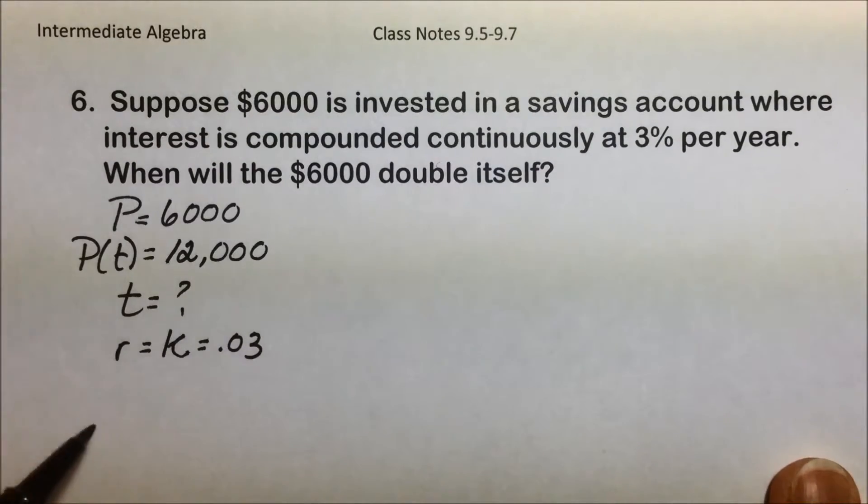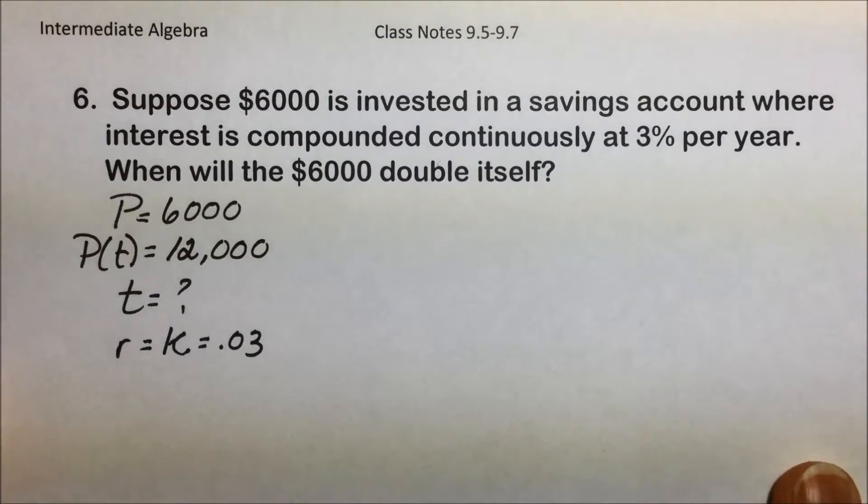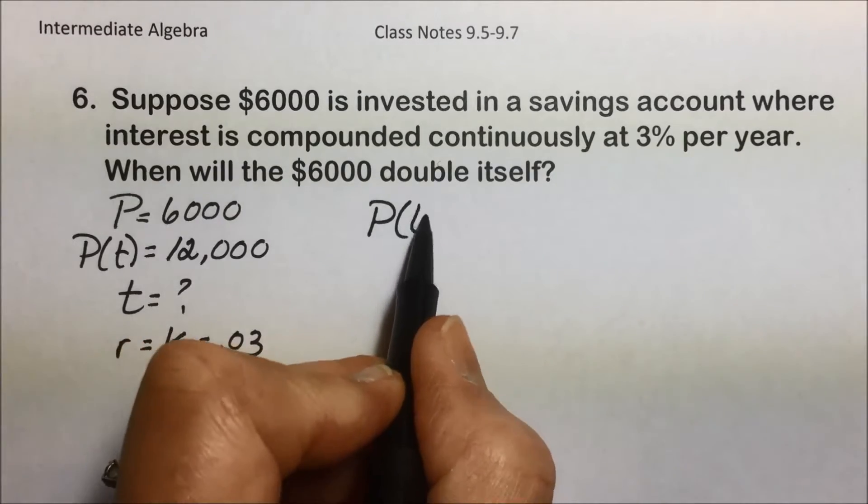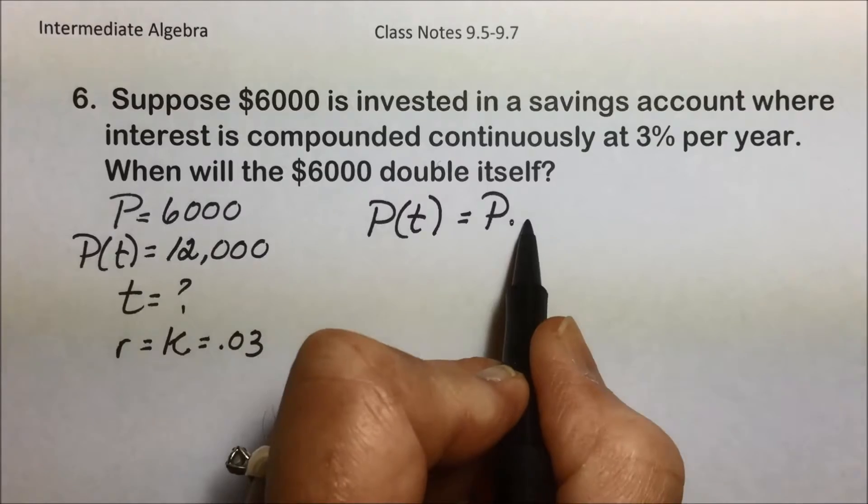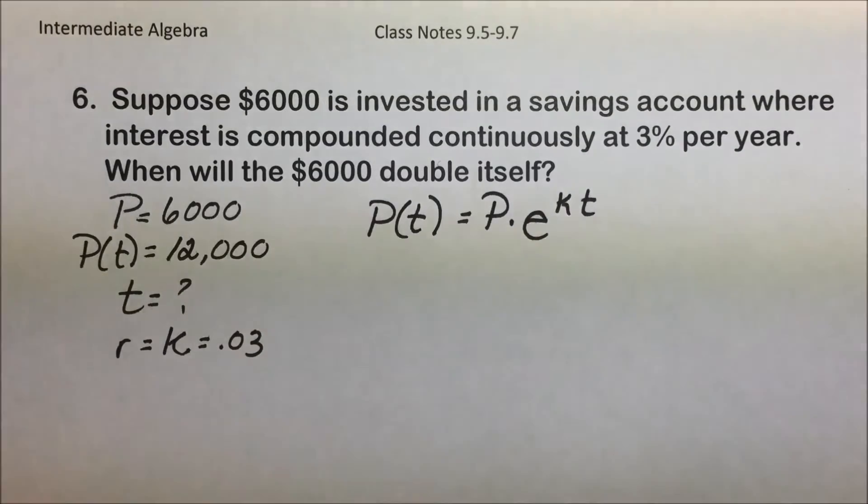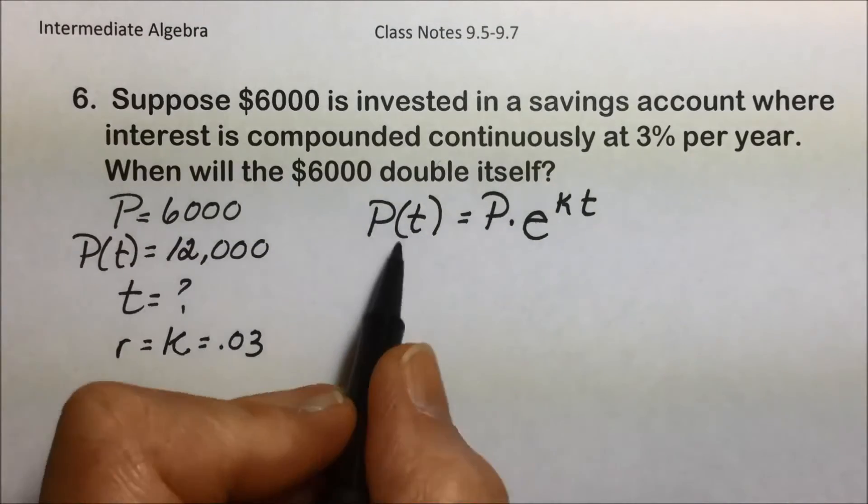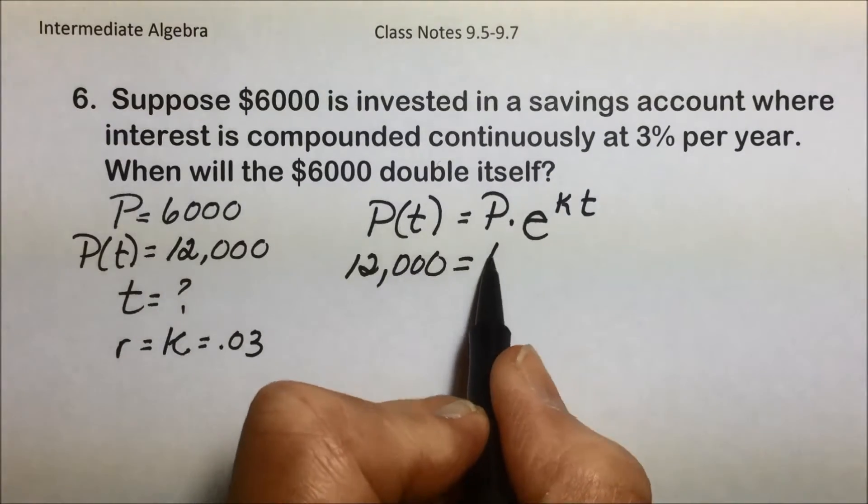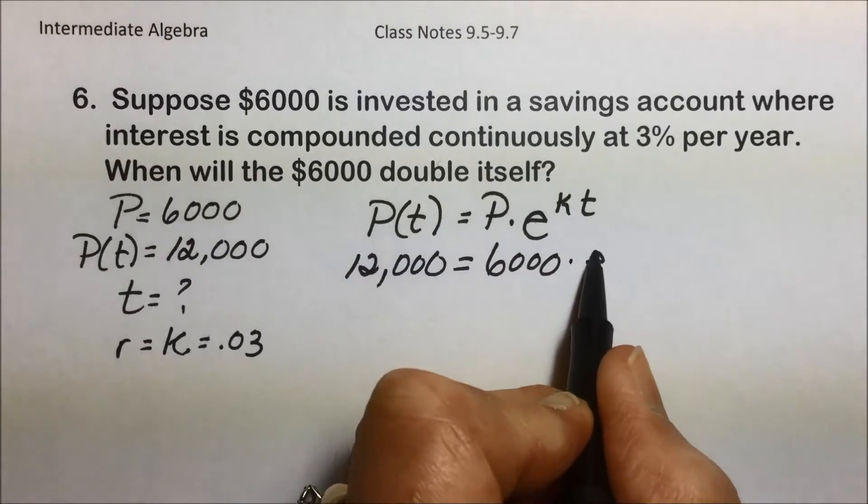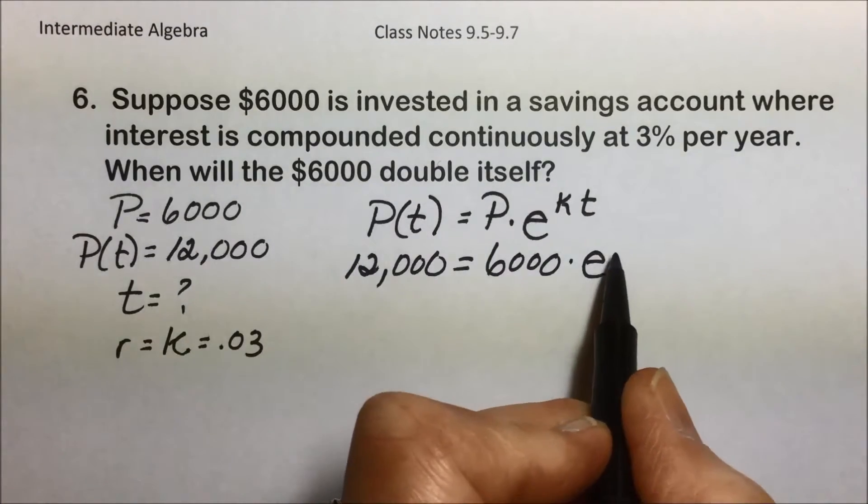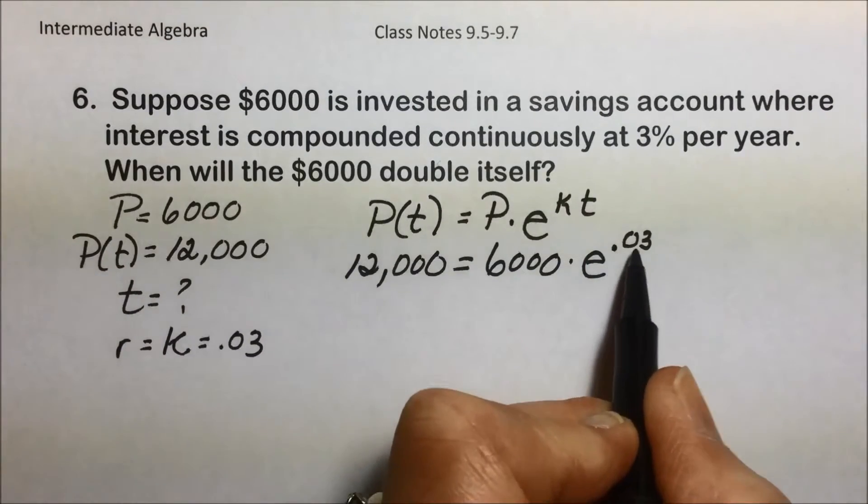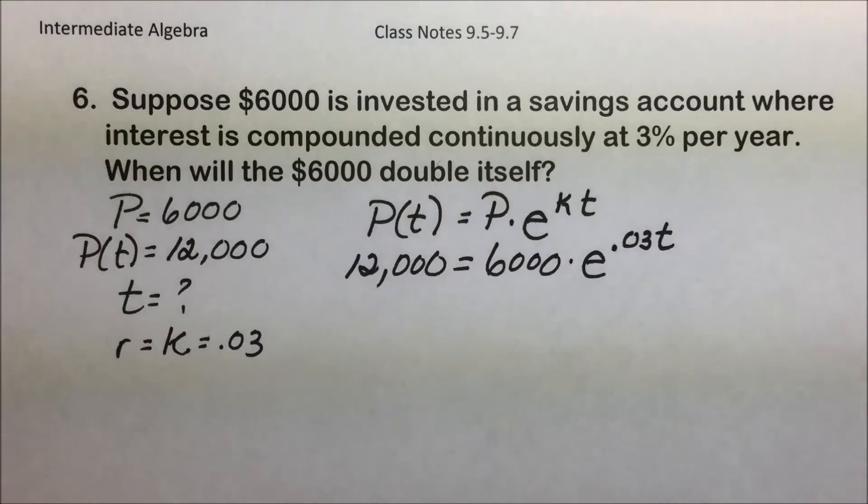This falls under the category of exponential growth. It's the doubling time. So we will fill in the following information to this generic form for exponential growth that we just laid out on our formula sheet. Our final dollar amount, or doubled amount, results in $12,000 is equal to the initial $6,000 times e to the exponential growth rate, which is 0.03 as a decimal equivalent to the percent times t that we're looking for.